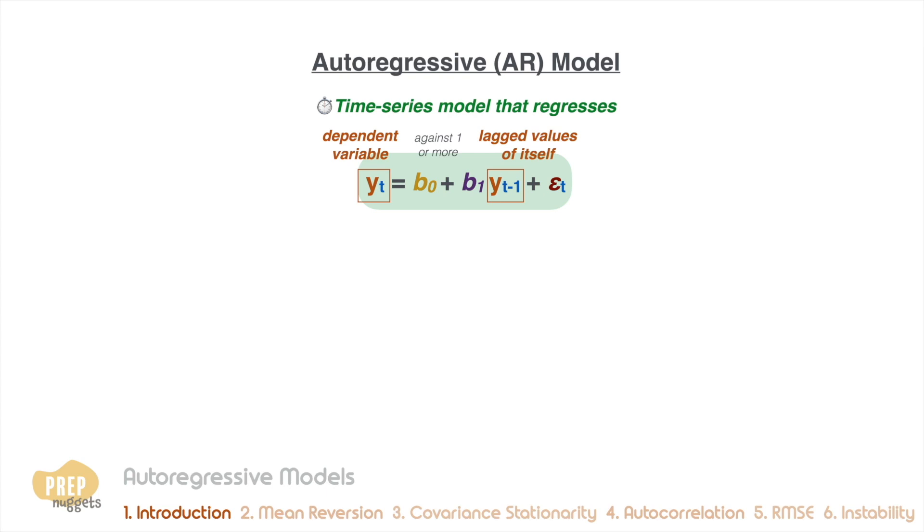The equation of an AR model can look like this, where yt minus 1 is the value of the dependent variable in the previous observation. This means that we use the past values of a variable to predict the current and future values of the variable.